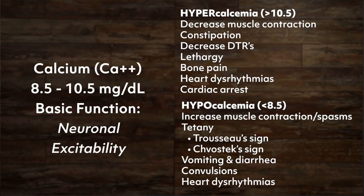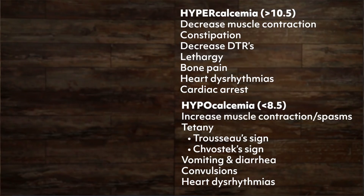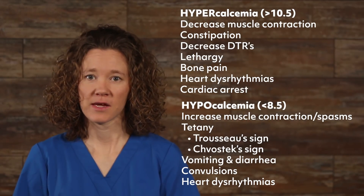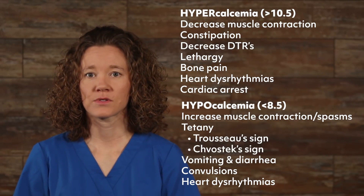Patients who have lost ionized calcium will be symptomatic. The simplified body function of calcium is neuronal excitability — motor neurons sending signals to muscles, causing them to contract. Hypocalcemia causes excess muscle contraction and spasms, while hypercalcemia causes decreased muscle contraction. Think of calcium as stabilizing membrane channels. Not enough calcium causes tetany, or involuntary contraction of muscles, vomiting and diarrhea, convulsions, and heart dysrhythmias. Two classic signs of tetany are Trousseau's sign — where inflating a BP cuff above systolic pressure causes the hand to develop a contracted position — and Chvostek's sign, elicited by tapping the facial nerve just below the temple, resulting in facial muscle twitching.